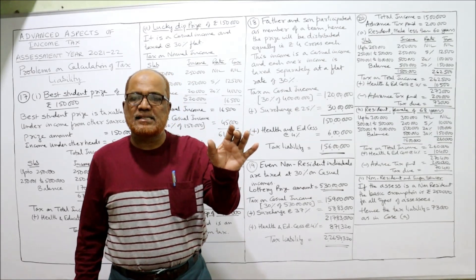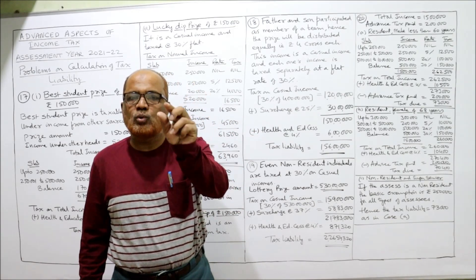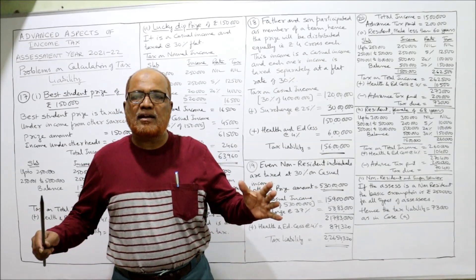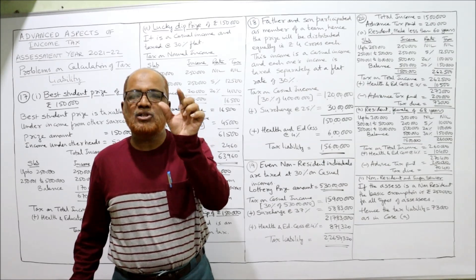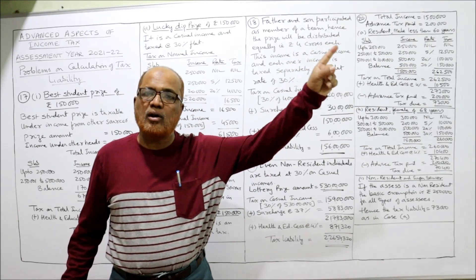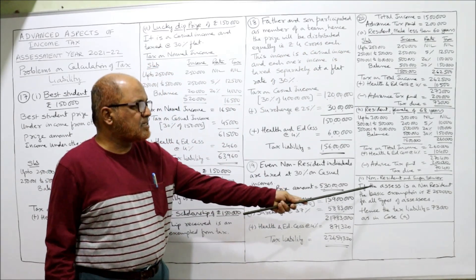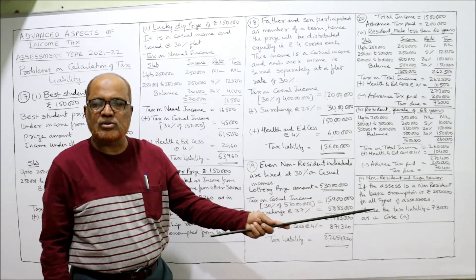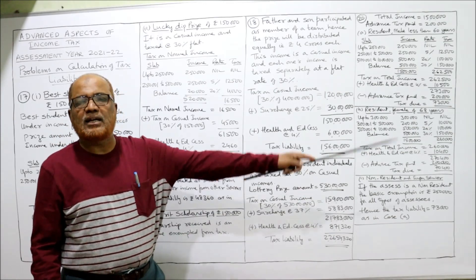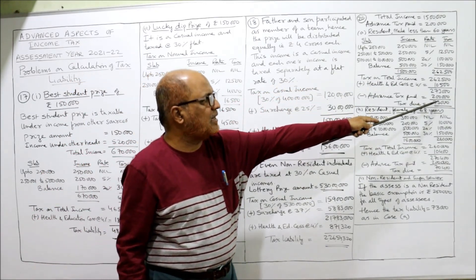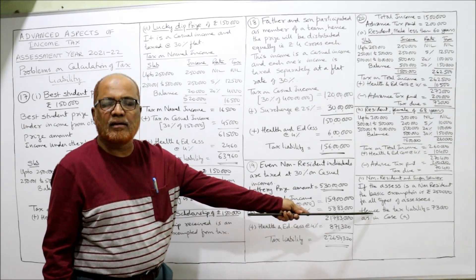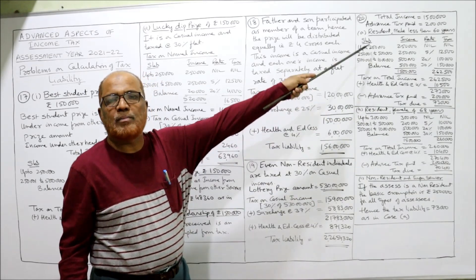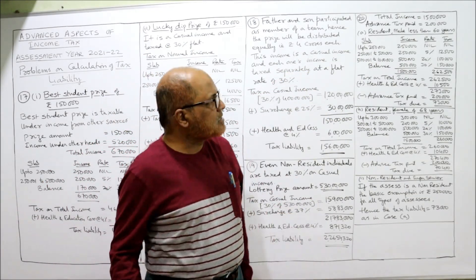Case 3: if the assessee is a non-resident and super senior citizen. For non-resident assessees, the basic exemption limit is the same two lakh fifty thousand — for non-senior, senior, or super senior, any type of non-resident assessee has a basic exemption limit of two lakh fifty thousand. Since the basic exemption limit is two lakh fifty thousand, the tax liability is the same as Case 1: seventy-three thousand. So this is the end of problem number 20.